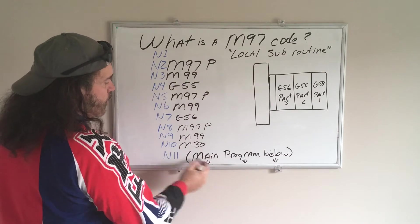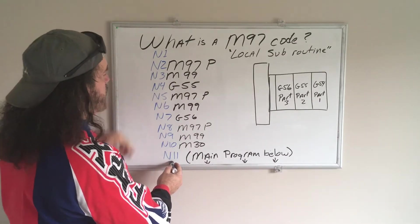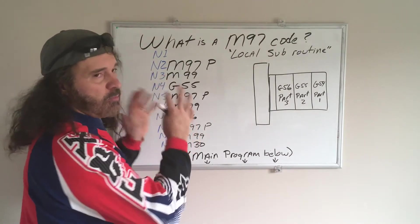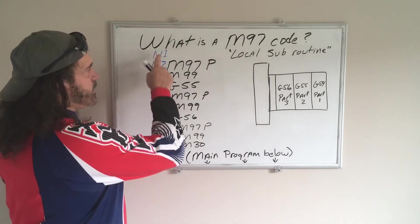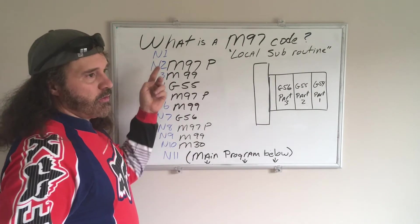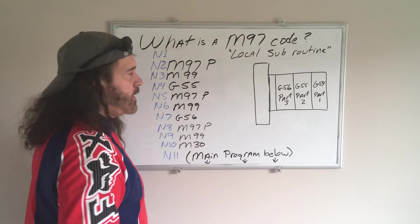You have to give your M97 a P-value, and that tells it what line you want that to jump to. So my program starts at line number 11, because every line of code has numbers. And I just did one through whatever it goes to. This could be in hundreds, but I forgot how to do it off the top of my head.